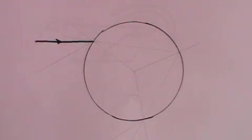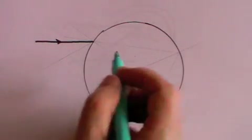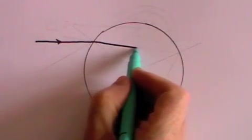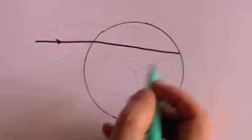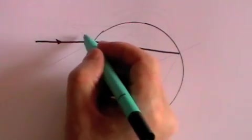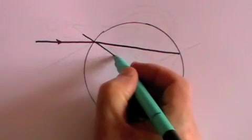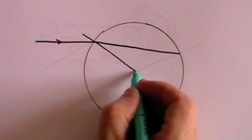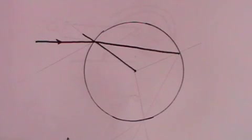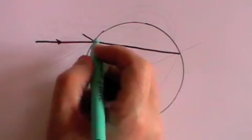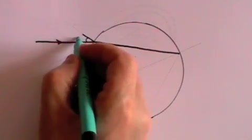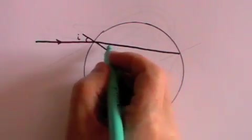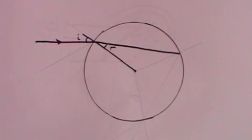As it hits the water, which is the raindrop, it will of course be refracted. And it will change direction. Now we're going to draw a normal to the raindrop. And that normal will by definition go through the centre of the raindrop. And what we know is that this is the angle of incidence and this is the angle of refraction.